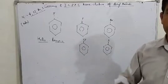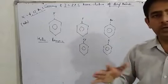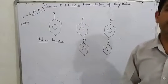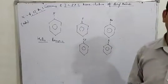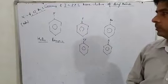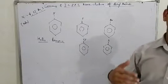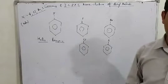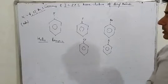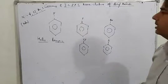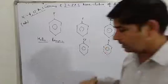Halobenzene is used in both the common and IUPAC system of nomenclature. In the common system of nomenclature, this applies when there is only one halogen on the benzene ring.